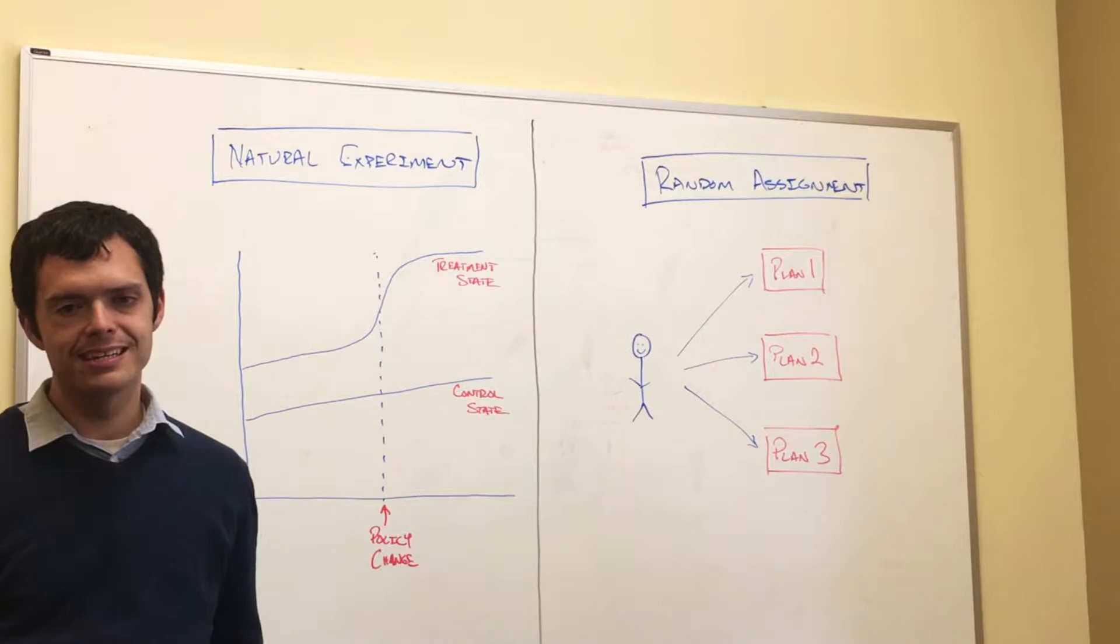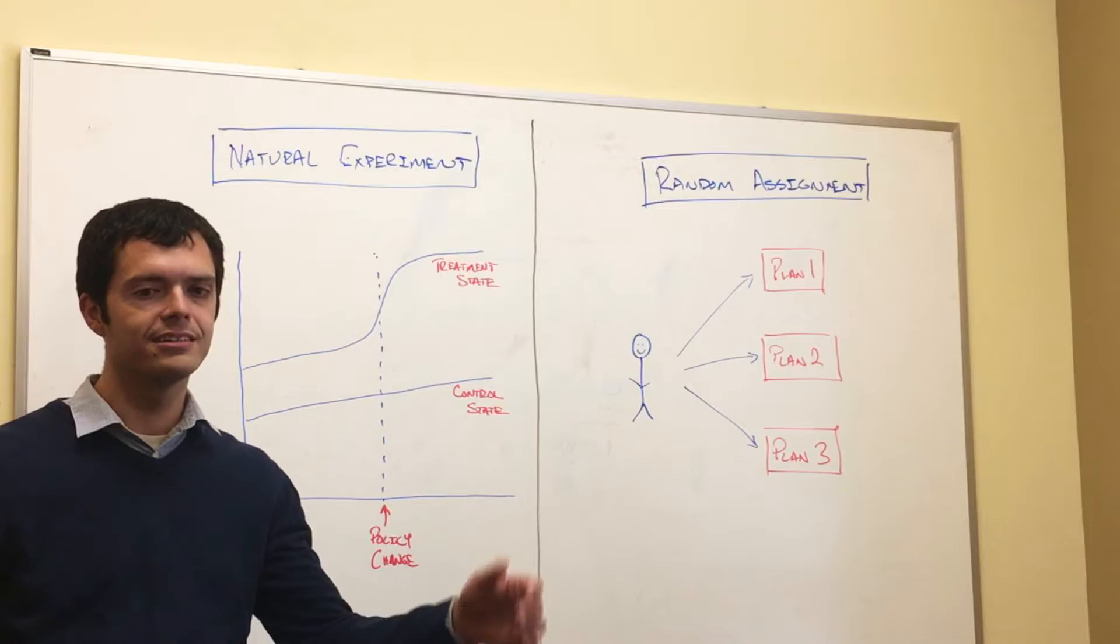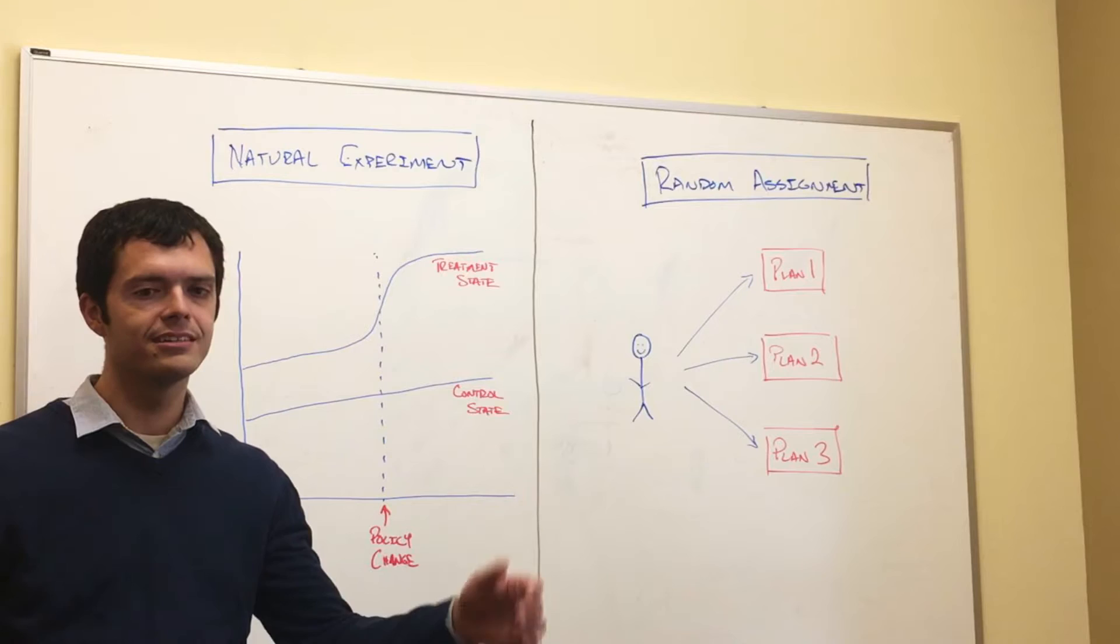It's not all bad. First, complexity can be helpful. Variation in the structure of Medicaid programs across states and over time allows us to use the so-called laboratory of democracy to perform natural experiments to study questions by comparing outcomes in states that change their policies to states that don't.